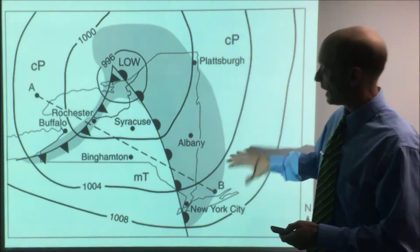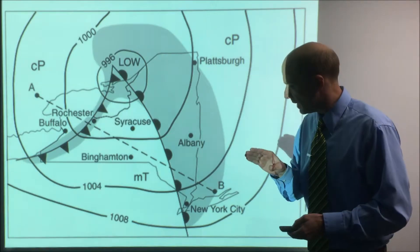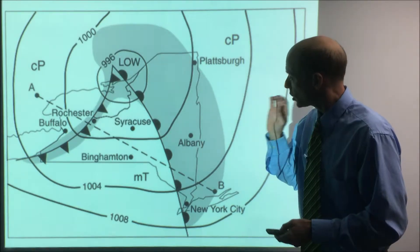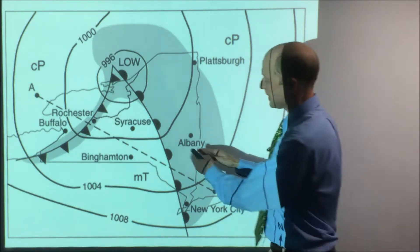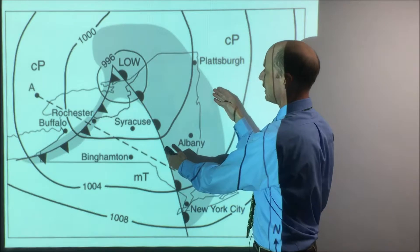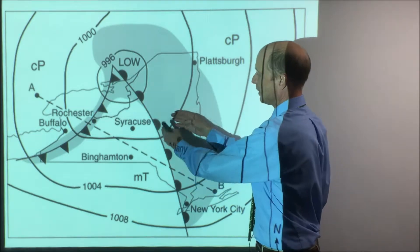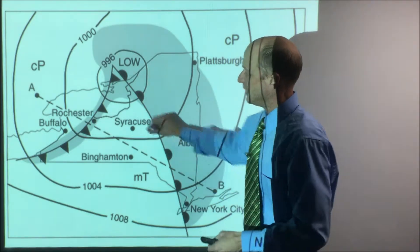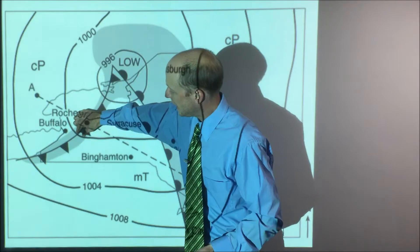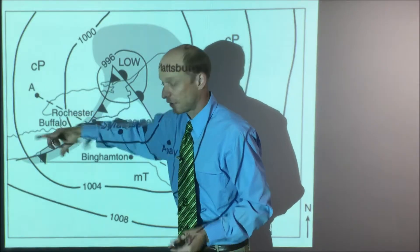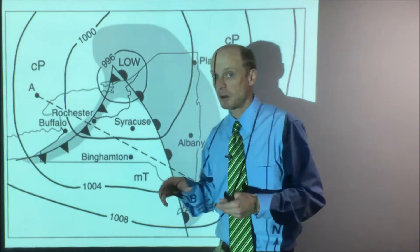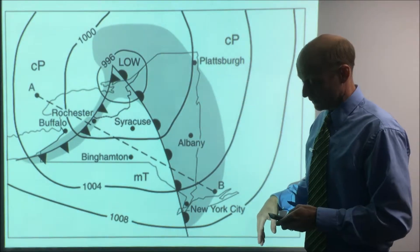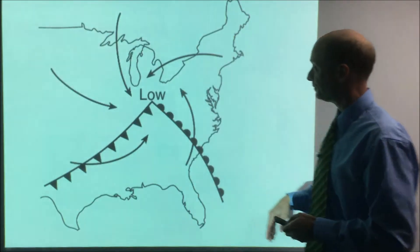This diagram shows it more clearly — out in front of the warm front you have a wide area of clouds, so again you get a long period of rain. The clouds at a cold front are narrower but much more intense.